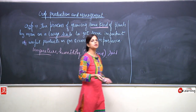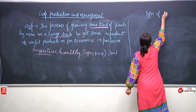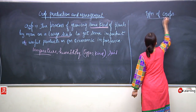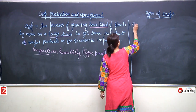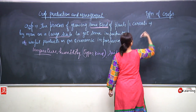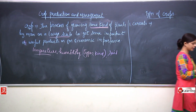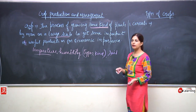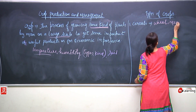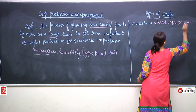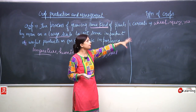Now I will deal with the types of crops. First of all, cereals. What are cereals? We all know the food grains — wheat, maize, rice, bajra, jowar. All these come under the category of cereals.